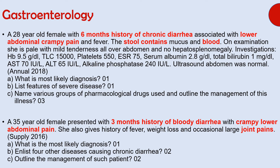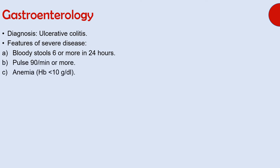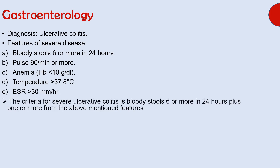The diagnosis is ulcerative colitis. The next part asked about features of severe disease, and they include bloody stools six or more in 24 hours, pulse 90 per minute or more, anemia with hemoglobin less than 10, temperature more than 37.8 degrees Celsius, and ESR more than 30. The criteria for severe ulcerative colitis is bloody stools six or more in 24 hours plus one or more of the above mentioned features.